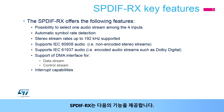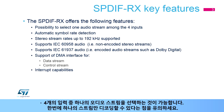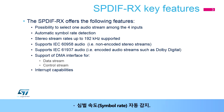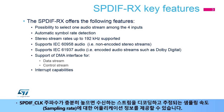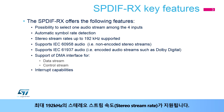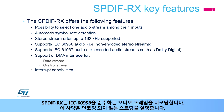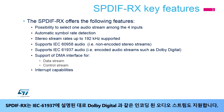The SPDIF-RX provides the following features: the possibility to select one audio stream among the four inputs — note that only one stream can be decoded at a single time. Automatic Symbol Rate Detection: if the SPDIF-CLK frequency is high enough, the SPDIF-RX will decode the incoming stream and provide information about its estimated sampling rate. Stereo stream rates up to 192 kHz are supported. The SPDIF-RX decodes audio frames compliant with IEC-60958, which describes non-encoded stereo streams, and also supports encoded audio streams such as Dolby Digital, as described in IEC-61937.